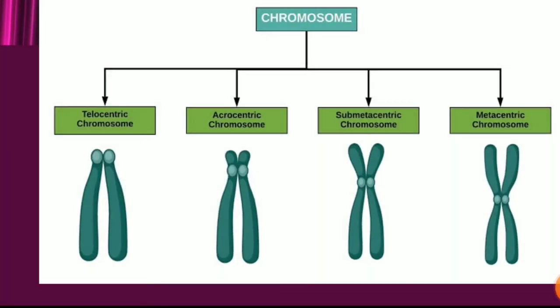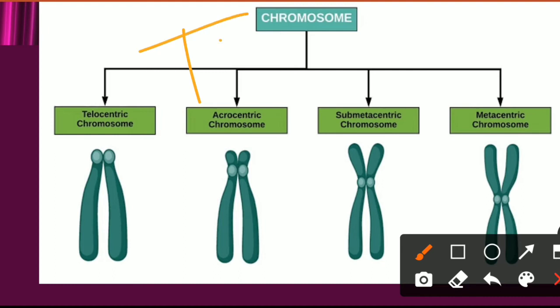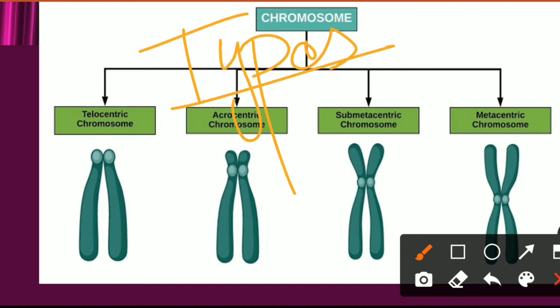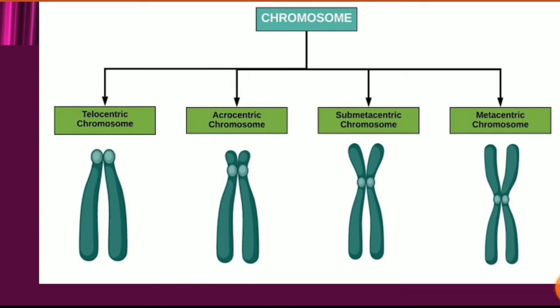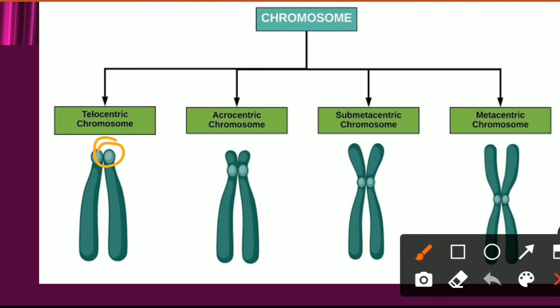Now we will talk about types of chromosomes. The first type is the telocentric chromosome. In telocentric chromosomes, the centromere is at the tip of the chromosome, and the chromosome appears rod-shaped. So to identify a telocentric chromosome: the centromere is always at the tip, and its structure is rod-like.